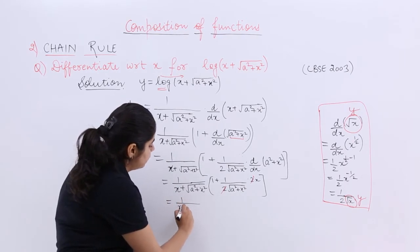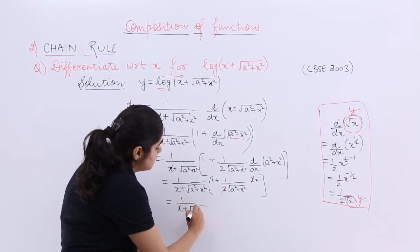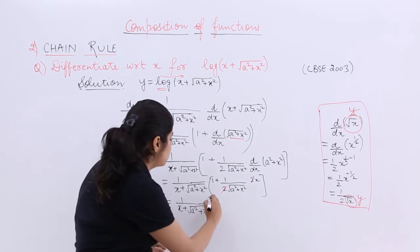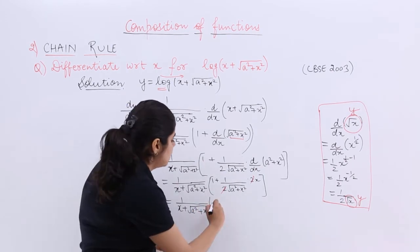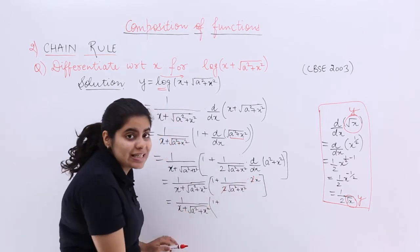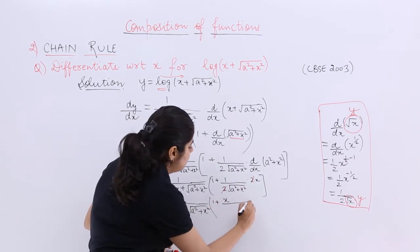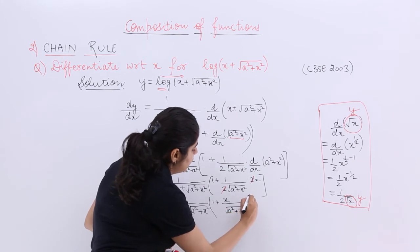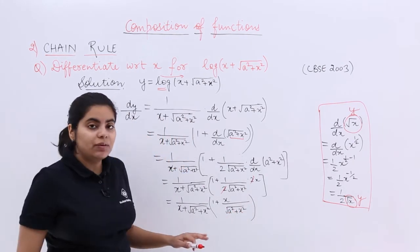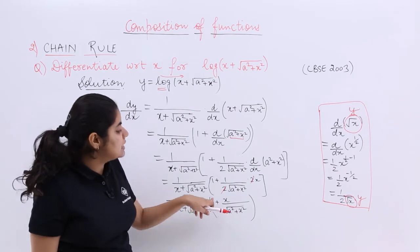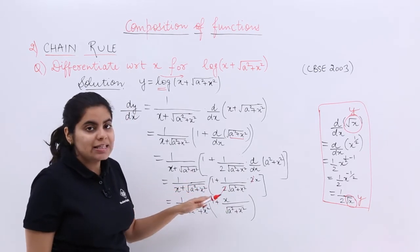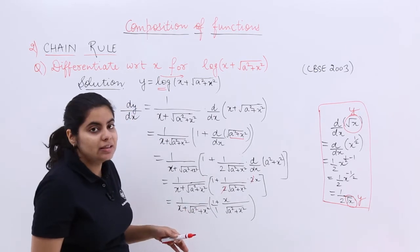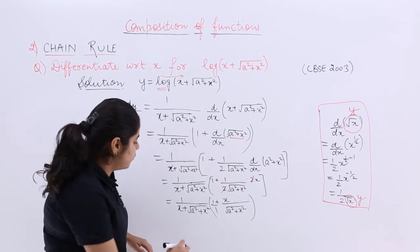In the next step, take the LCM of the bracket expression. Treating 1 as a fraction with denominator √(a² + x²), the LCM gives us (√(a² + x²) + x) / √(a² + x²). Let's work this out here.